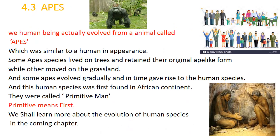We human beings actually evolved from an animal called apes, which was similar to a human being in appearance. Some ape species lived on trees and retained their original ape-like form, while others moved onto grassland. Some apes evolved gradually and in time gave rise to the human species. This human species was first found in the African continent and was called primitive man — the word primitive means first. We shall learn more about the evolution of human species in the coming chapter.